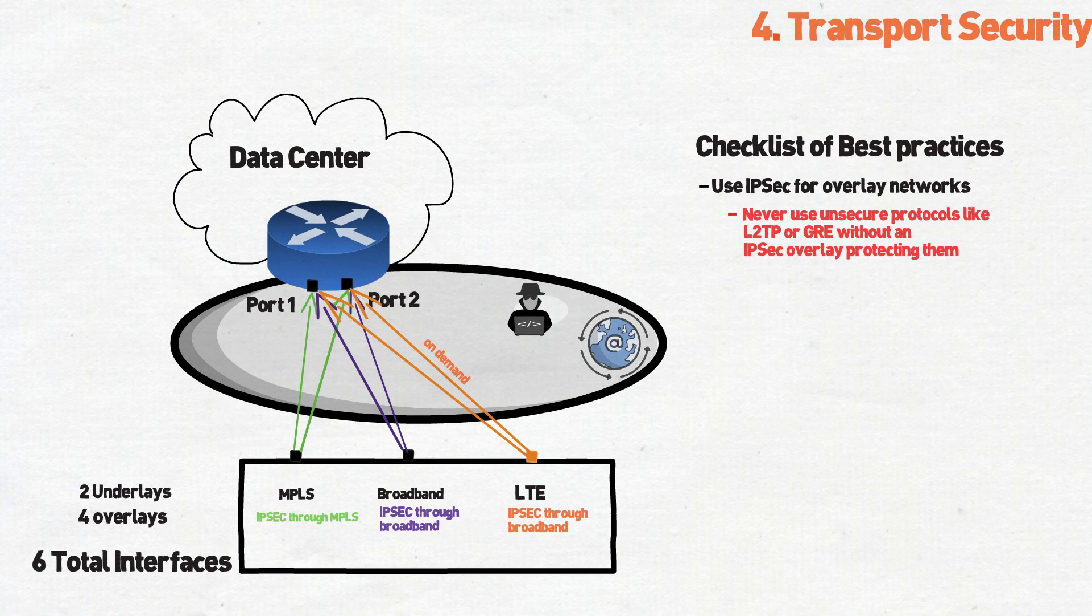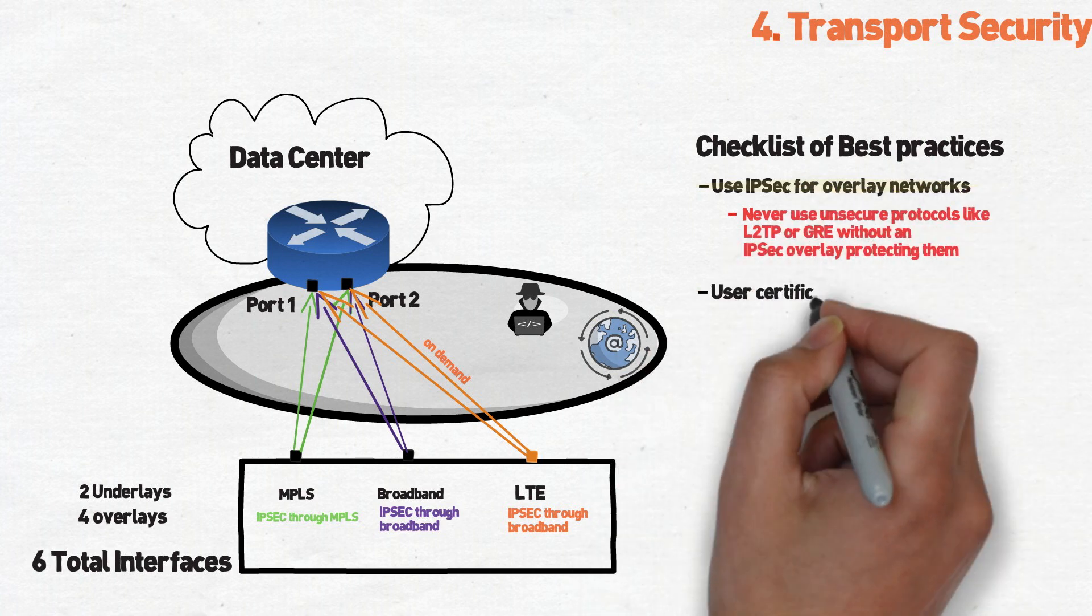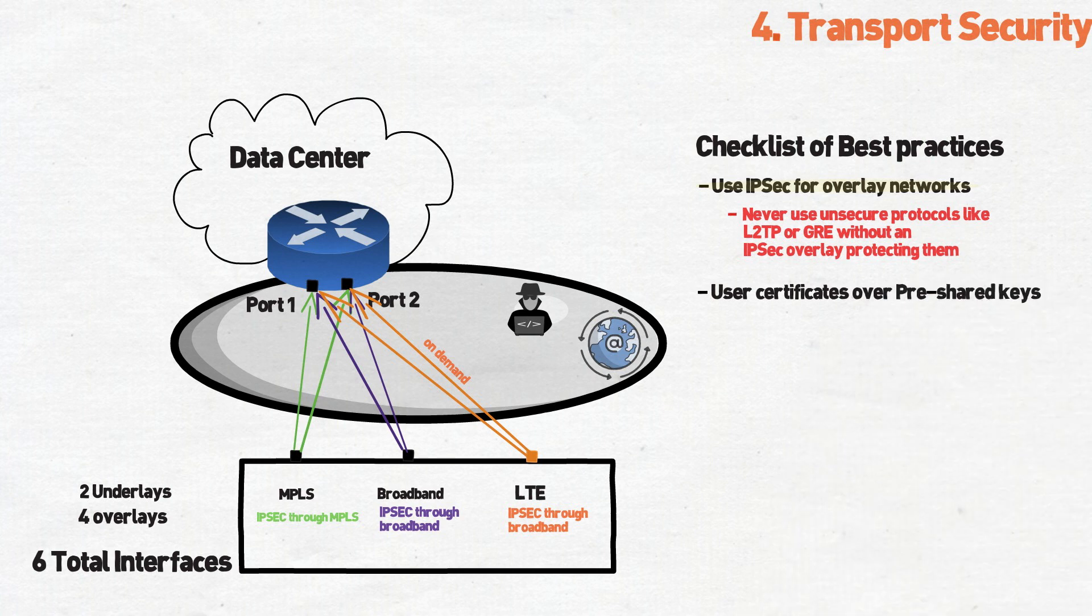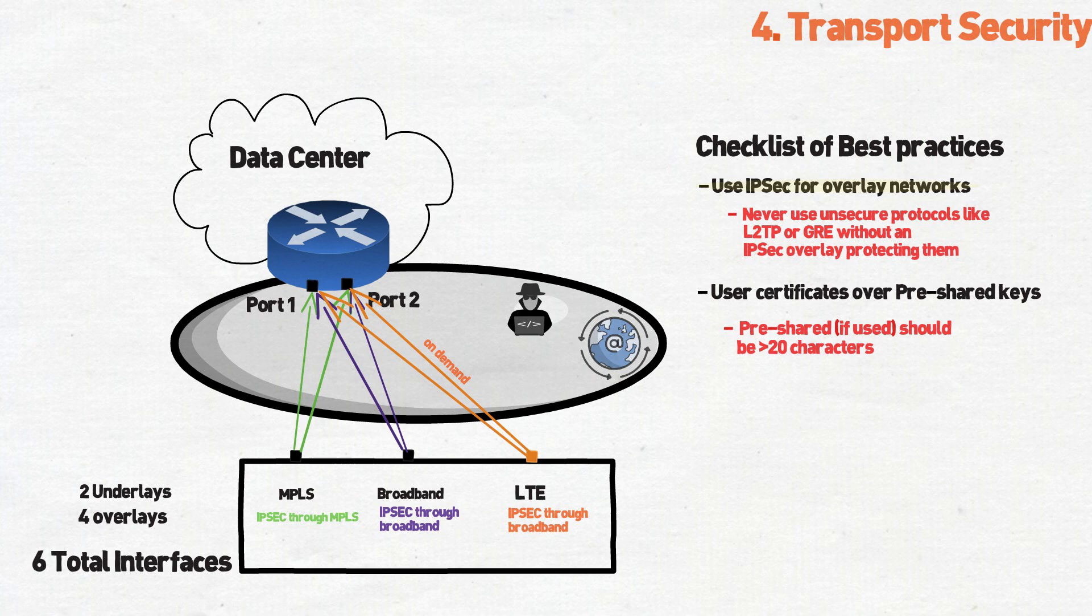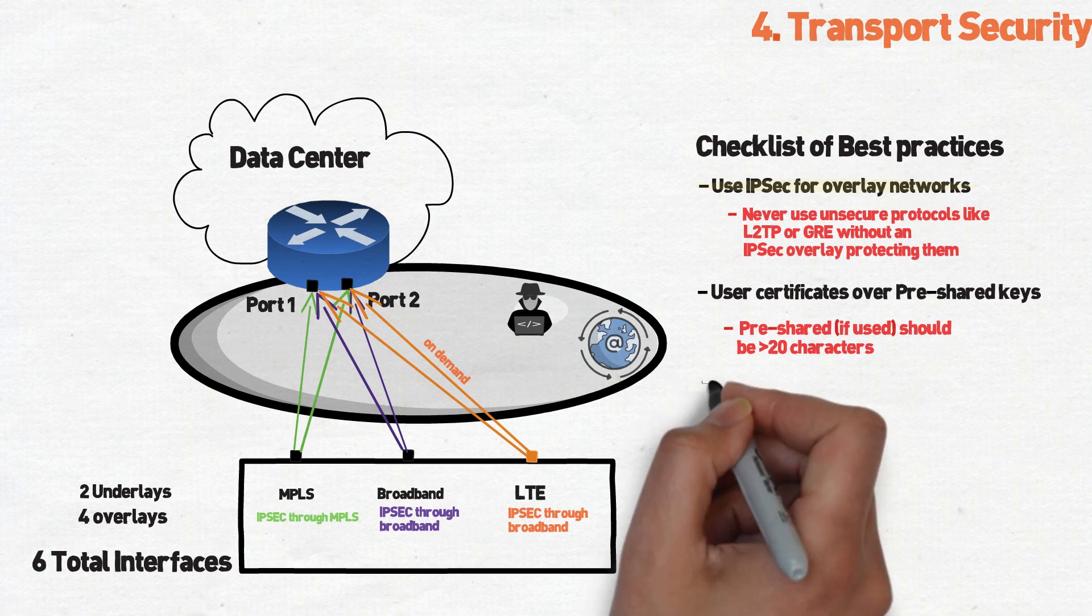This part is especially critical if you're using cloud security, which sometimes they recommend to use unsecured protocols for traffic offloading like GRE or HTTP proxies. When using IPsec, consider the following best practices. Use certificates over pre-shared keys. And if you need to use pre-shared keys, make sure that they're longer than 20 characters in length.